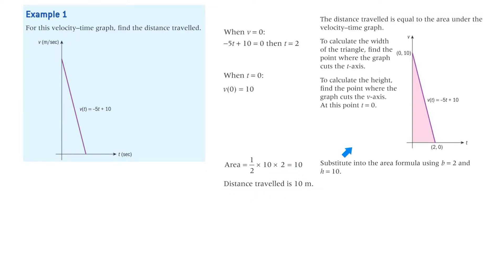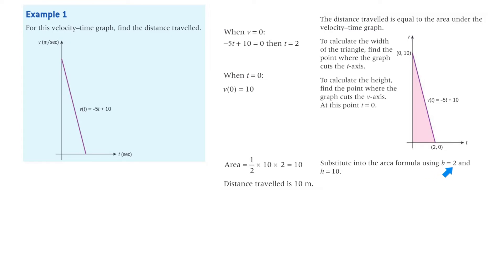The distance travelled is equal to the area under the velocity time graph. To calculate the width of the triangle, find the point where the graph cuts the t-axis. To calculate the height, find the point where the graph cuts the v-axis, where t equals 0. Putting them into the area formula — half base times height — using 2 and 10 gives an area of 10. The distance travelled is 10 metres.